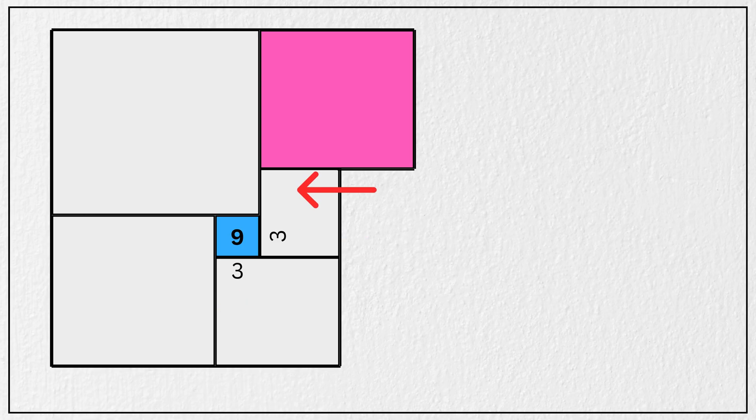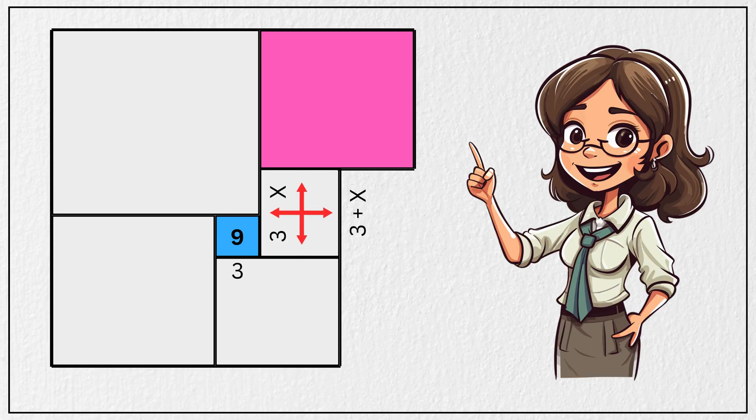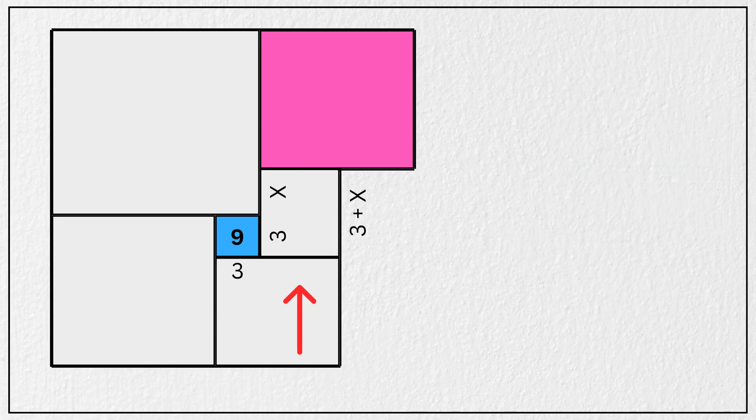Now let us define the side length of this small inner square as x units. Now look carefully if this length is 3 units and this length is x units. That means the total length of this square will be 3 plus x units. And since all sides of a square are equal in length, which means this length is also 3 plus x units.